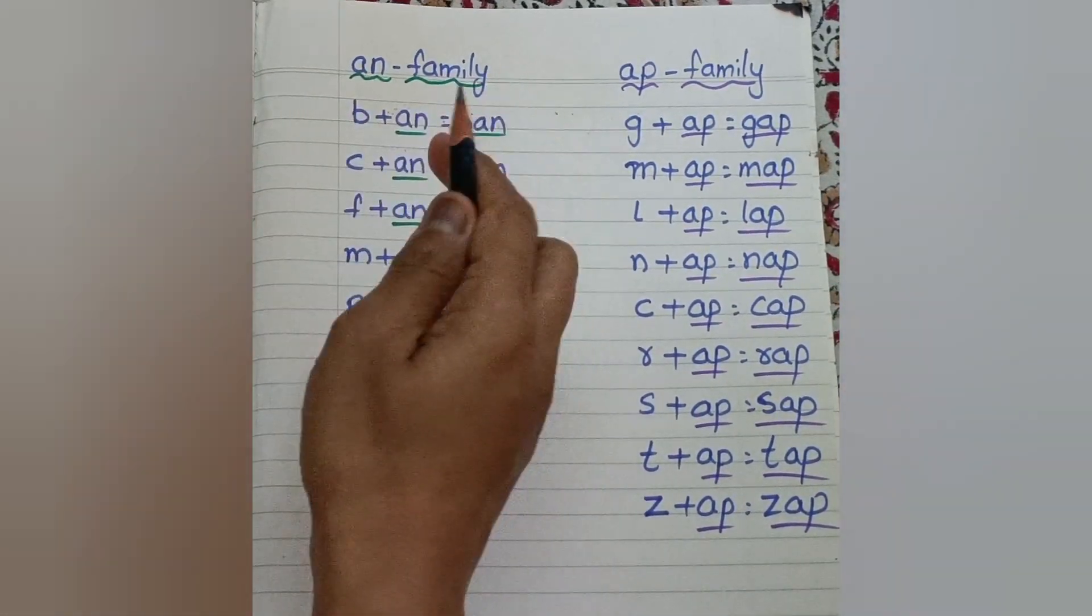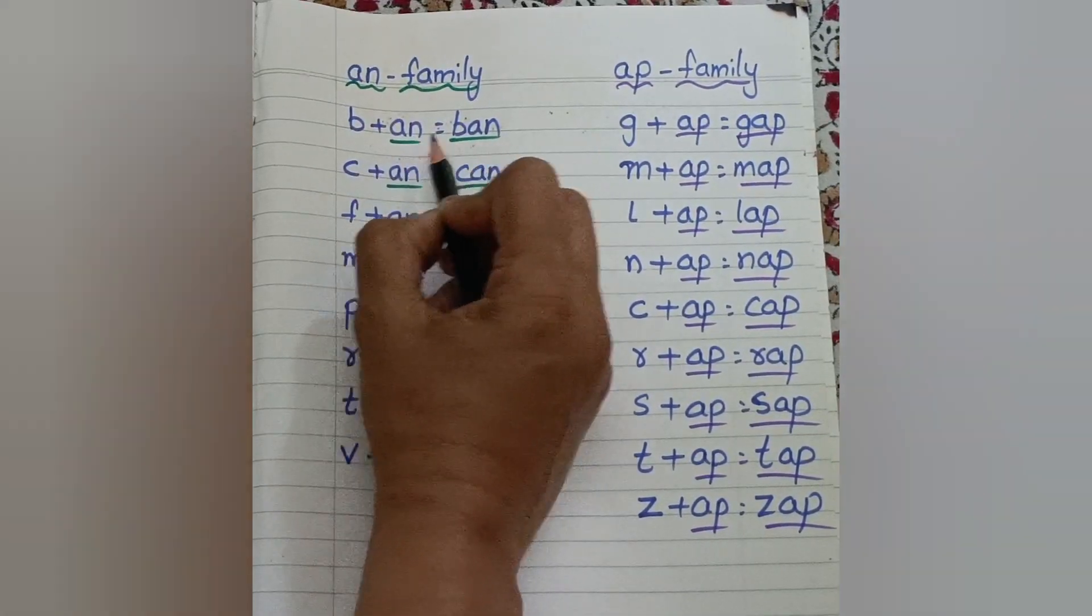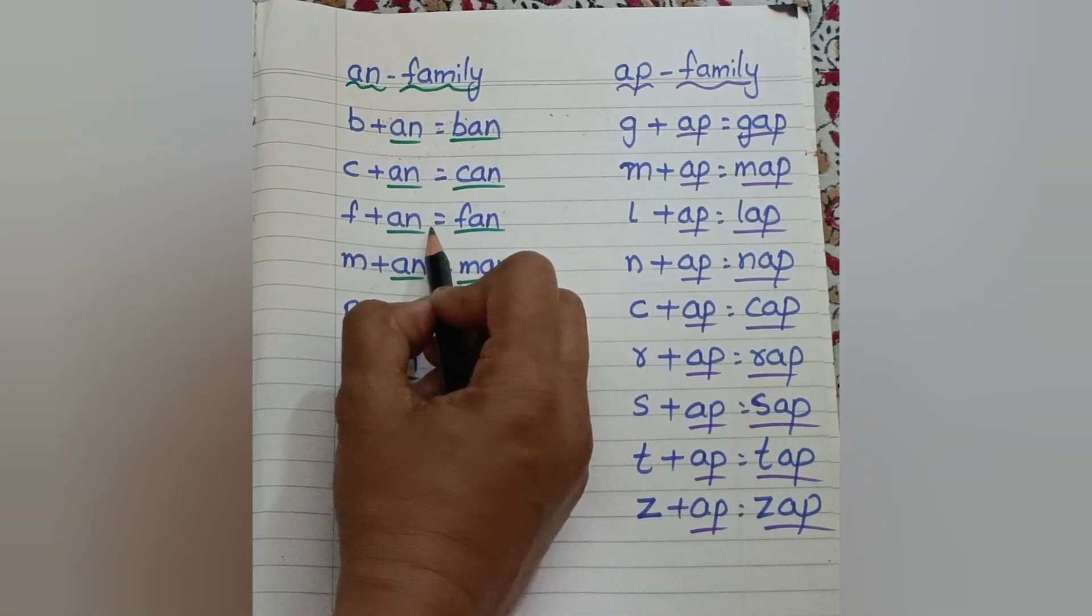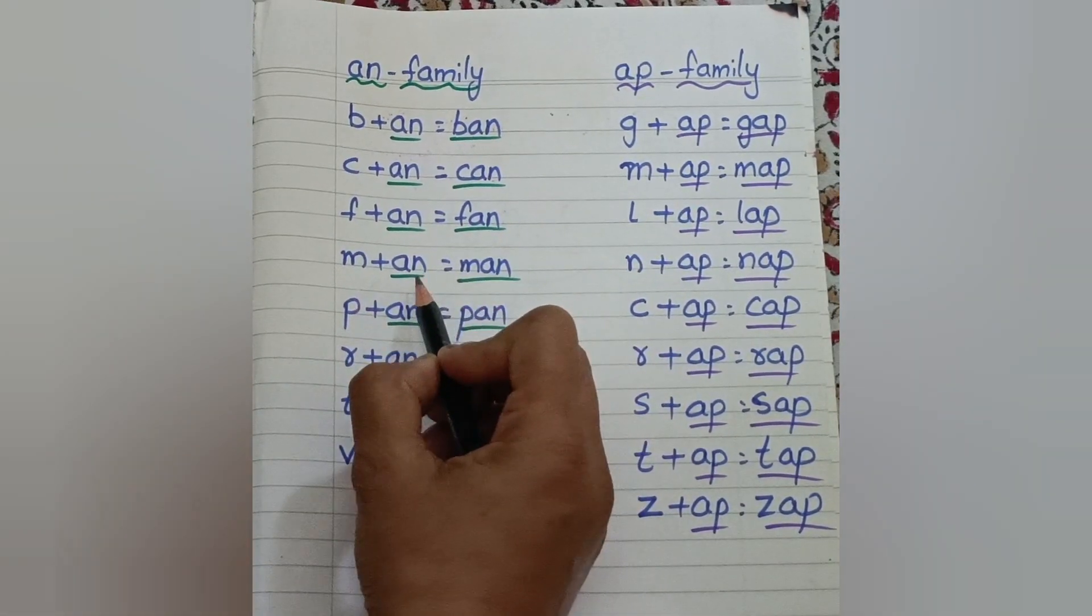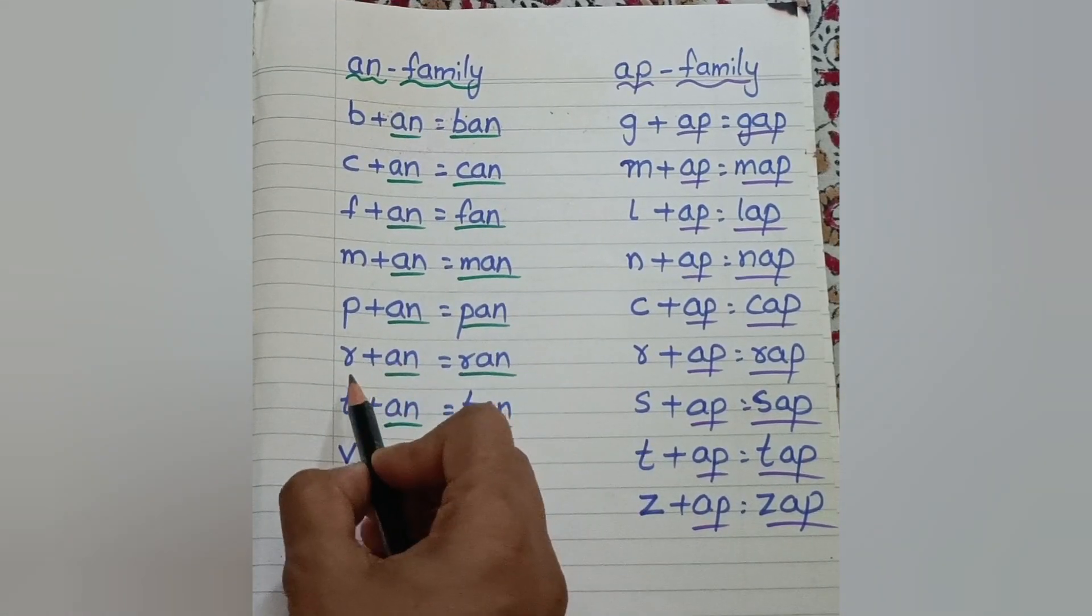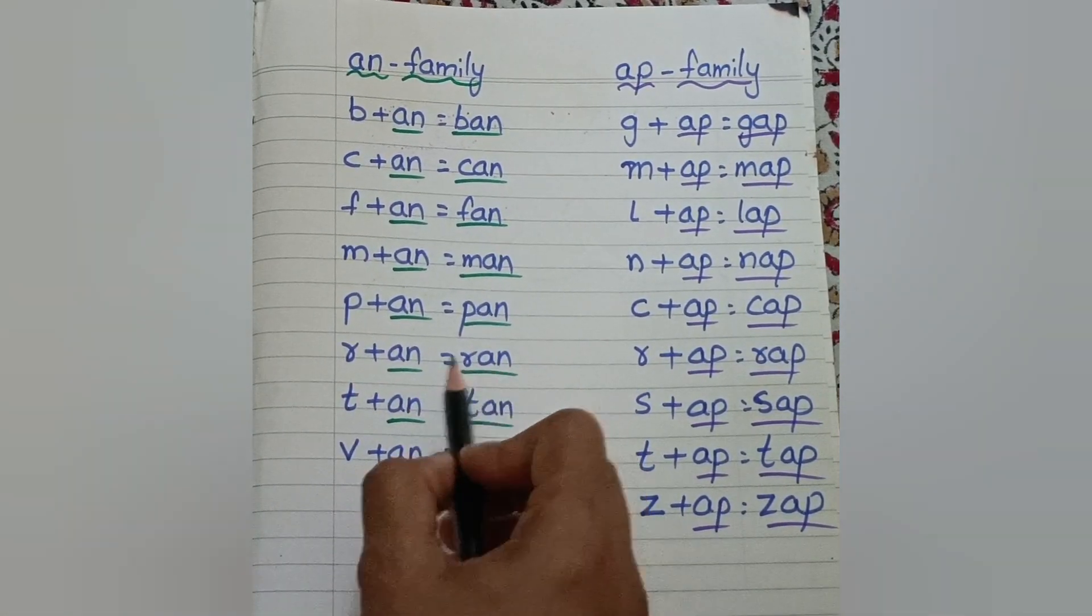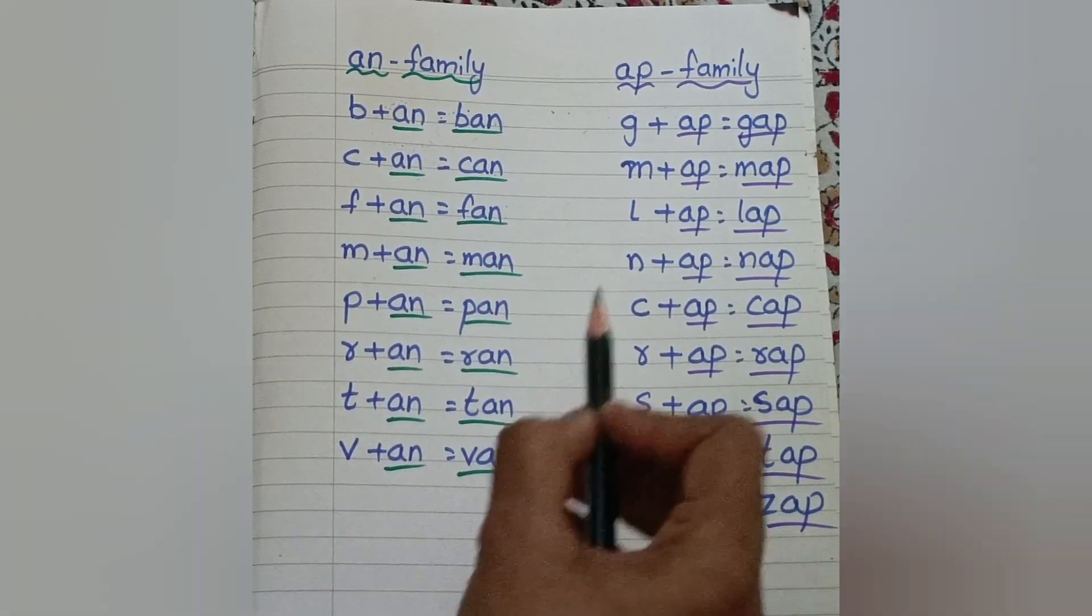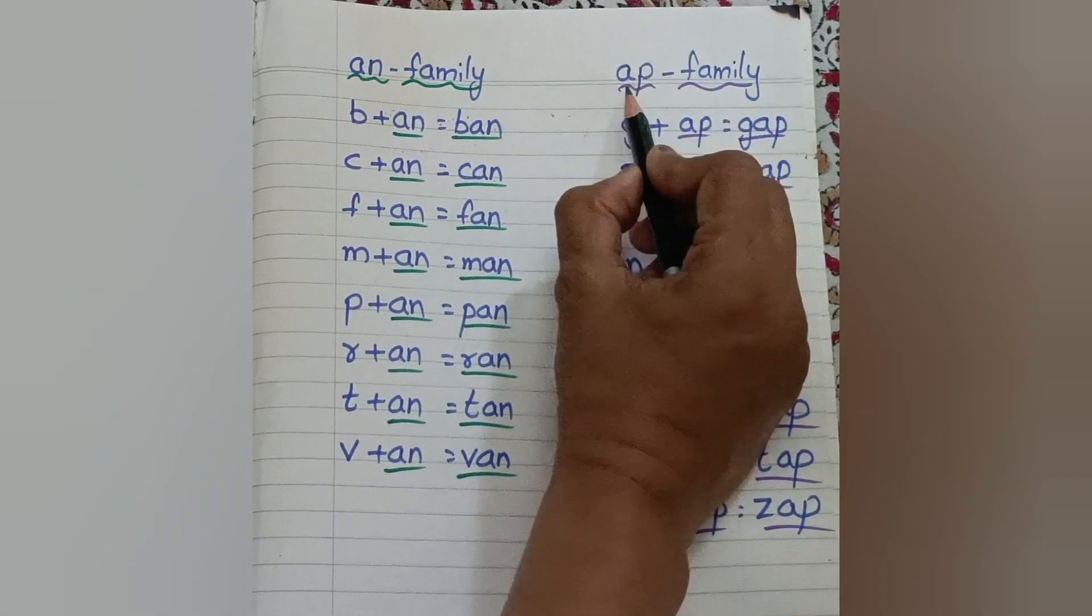Now we have An family. B, An: Ban. K, An: Can. F, An: Fan. M, An: Man. P, An: Pan. R, An: Ran. T, An: Tan. W, An: Van.